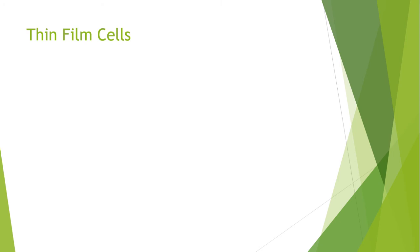This is a continuation of lecture number 16. In this part of the lecture, I will discuss thin film solar cells. A thin film solar cell is a type of device basically designed to convert light energy into electrical energy through the photovoltaic effect, and is composed of micron-thick photon-absorbing material layers.